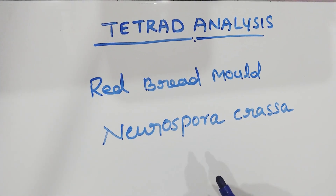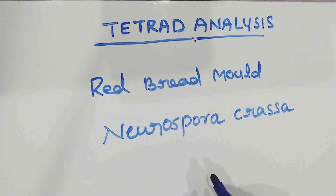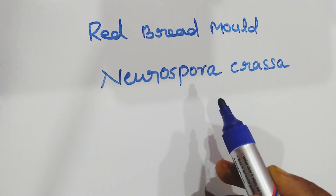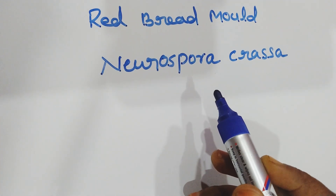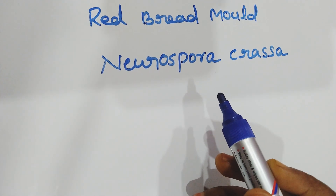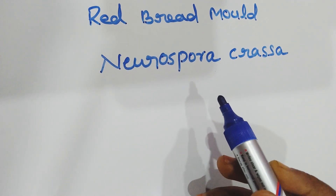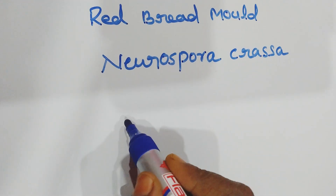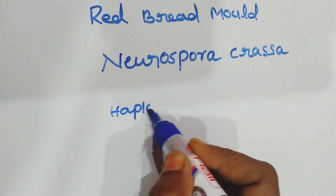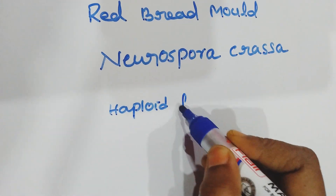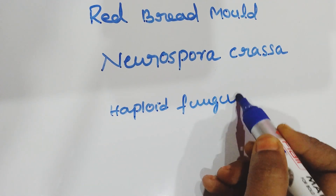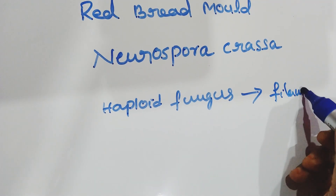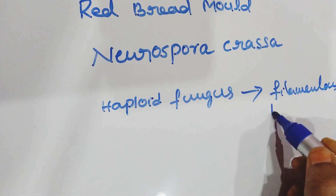Neurospora crassa provides a genetical proof for crossing over. Neurospora crassa is a haploid fungus having filamentous septate hyphae.